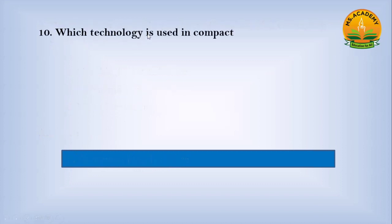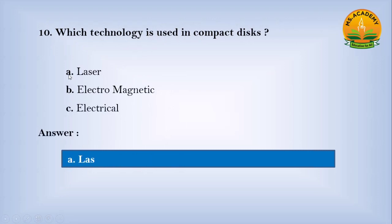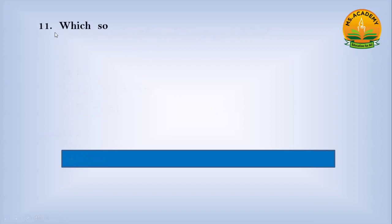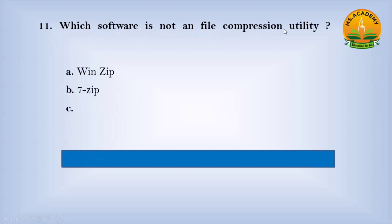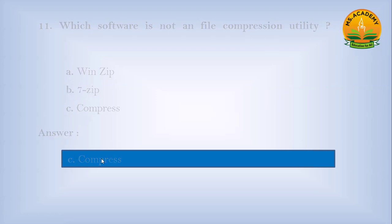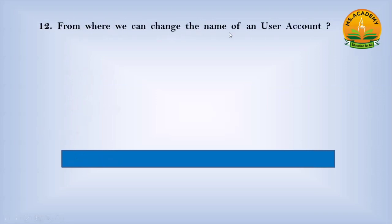Which technology is used in a compact disk? Option A: laser, option B: electromagnetic, option C: electrical. Answer: A — laser. Which software is NOT a file compression utility? Option A: WinZip, option B: 7-Zip, option C: Compress. Answer: C — Compress.